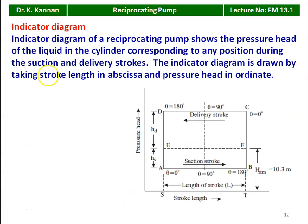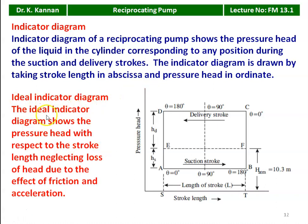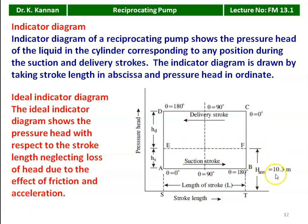The indicator diagram of a reciprocating pump shows the pressure head of the liquid in the cylinder corresponding to any position during the suction and delivery stroke. The indicator diagram is drawn by taking stroke length on the x-axis (abscissa) and pressure head on the y-axis (ordinate). The ideal indicator diagram shows pressure head with respect to stroke length, neglecting losses due to friction and acceleration. Line EF represents the atmospheric pressure head — the center of the cylinder at 10.3 meters.